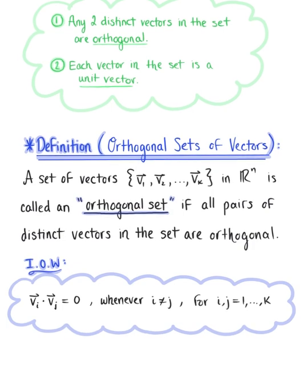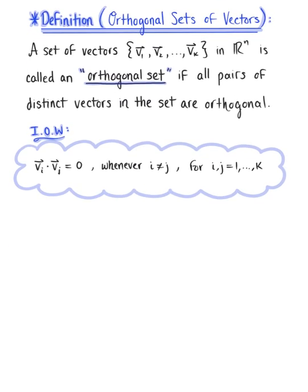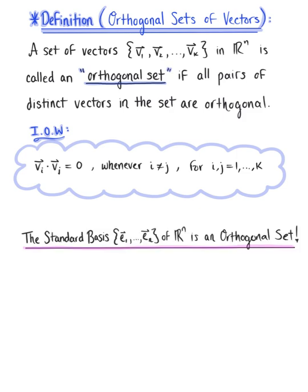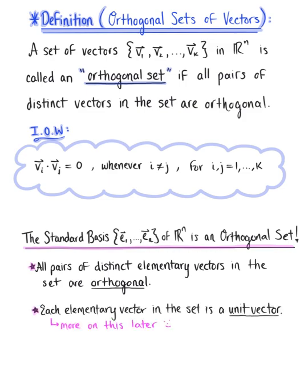When we think about this definition for orthogonal sets of vectors, we realize that the standard basis of Rn is an orthogonal set of vectors. We can easily see that all pairs of distinct elementary vectors in this set are orthogonal, and each elementary vector is a unit vector. We can even take this one step further and say that any subset of the standard basis of Rn is also an orthogonal set of vectors.